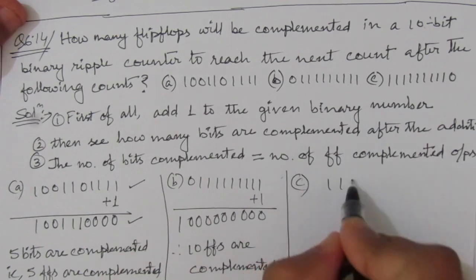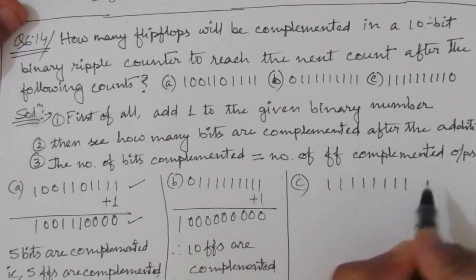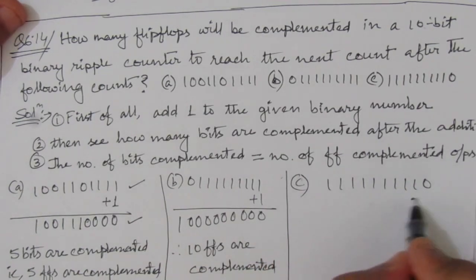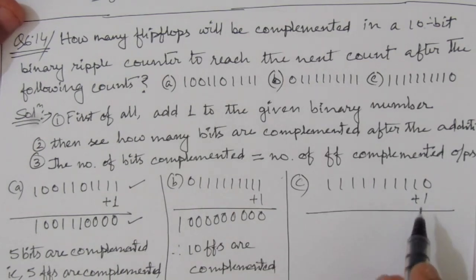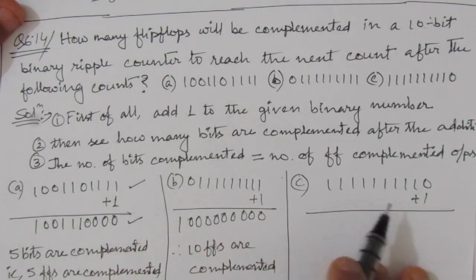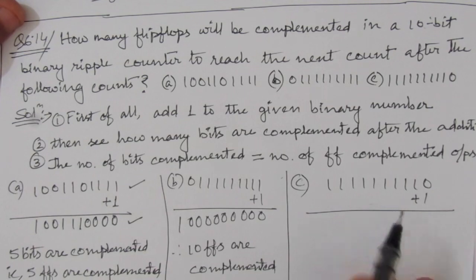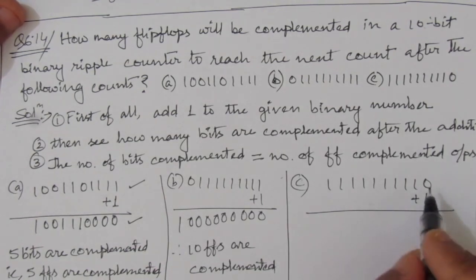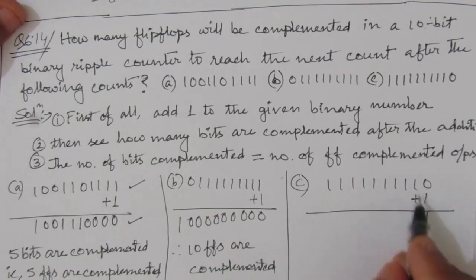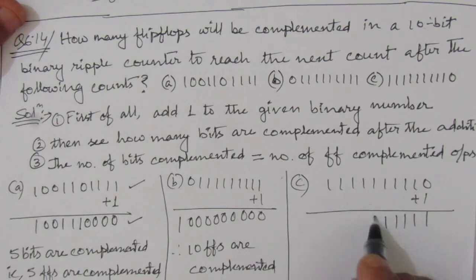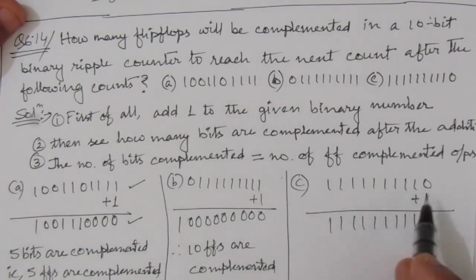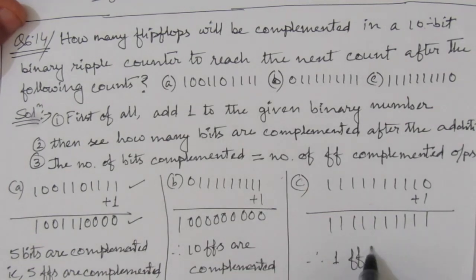For part (c) we are given 1111111110. Adding one: zero plus one equals one, and there is no carry, so all other bits remain the same. Comparing the two numbers, there is only one bit changed. Therefore, one flip flop is complemented.